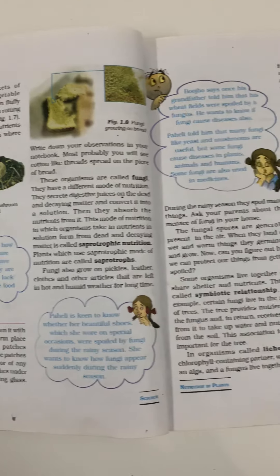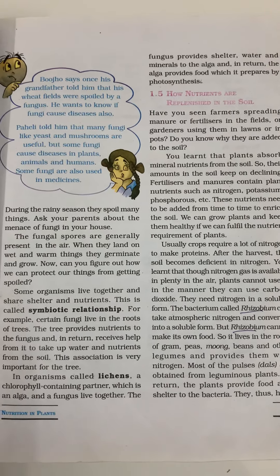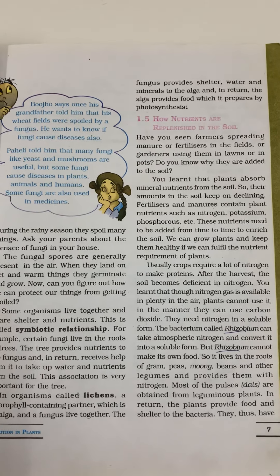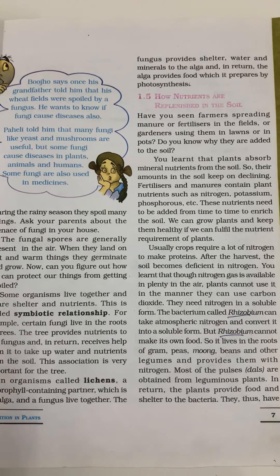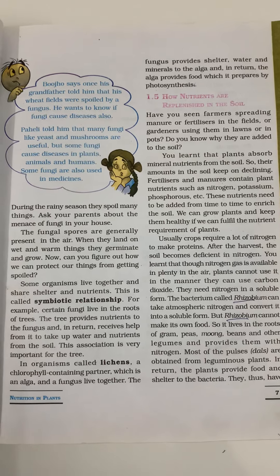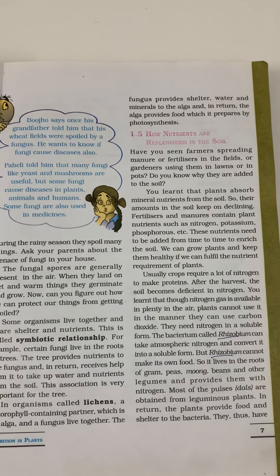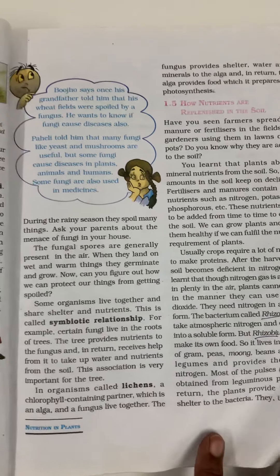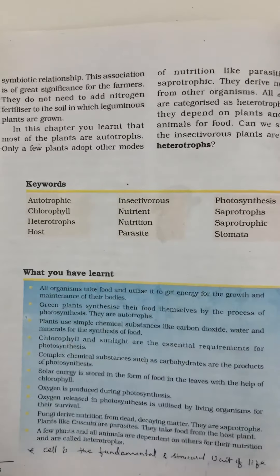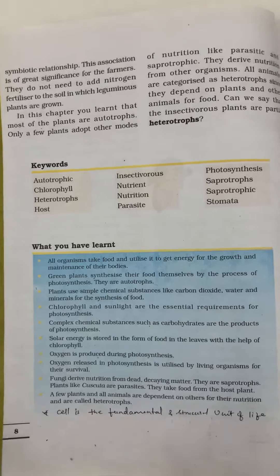The third mode of nutrition is symbiotic. Here, two organisms live together and benefit each other — one provides shelter and the other provides food. The best example is lichen, where algae and fungus live together. The algae, being green, provides food for the fungus, and the fungus provides shelter for the algae.